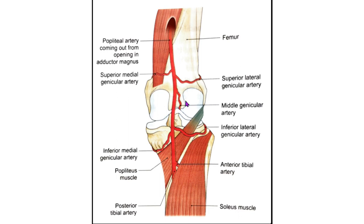Looking at the clinical anatomy of the popliteal artery: the blood pressure in the lower limb is recorded from the popliteal artery, and the popliteal artery is more prone to aneurysm than many other arteries in the body.